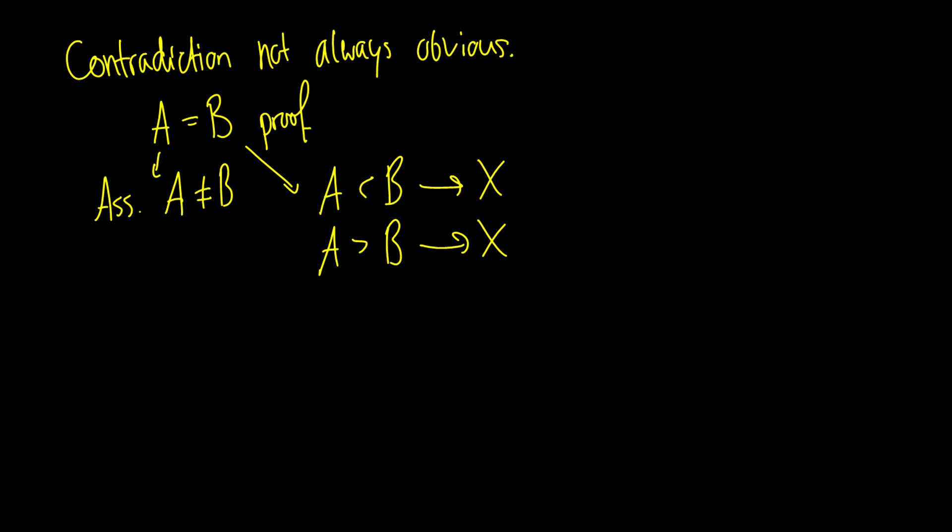And of course, perhaps you don't want to do contradictions. Instead, you want to show it directly. Then you could show that A is less than or equal to B and A is greater than or equal to B. And if something is less than or equal to and greater than or equal to, it must be equal to. So those are different ways you can do for an A equals B proof.